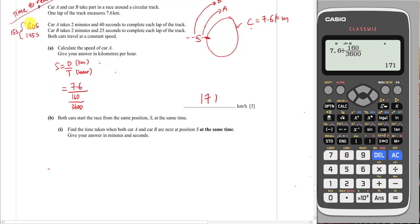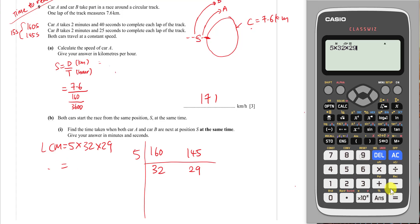What I want to do is find their lowest common multiple. If I have 160 seconds and 145 seconds, I want to know what is the common time for both of them. Definitely both of them will reach a certain time that is the same. So I use the lowest common multiple method. I divide by 5 here. This one gives me 32, this one gives me 29. Both numbers cannot divide anymore. So I know my lowest common multiple is 5 multiplied by 32 multiplied by 29. That's 4640 seconds.